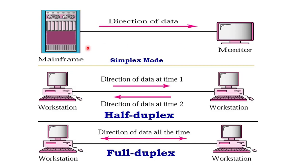First is simplex — in simplex, communication is unidirectional. Here the sending device only sends the data and the receiving device only receives the data; the communication is one-directional. The best examples of simplex are the radio station, the keyboard and monitor, or the CPU and monitor — the CPU or keyboard only gives the input and the monitor displays the output.